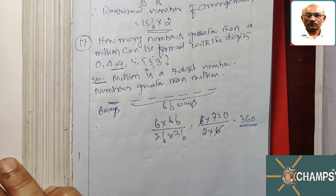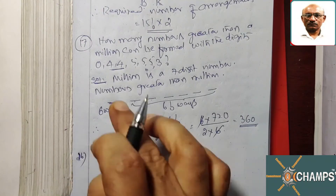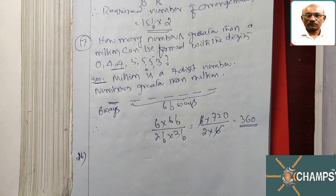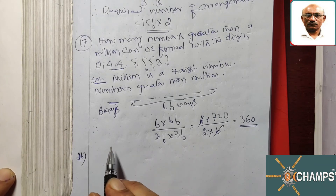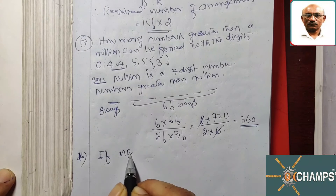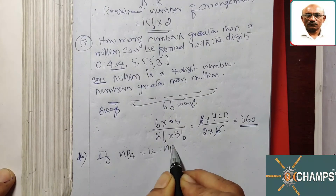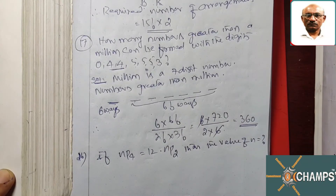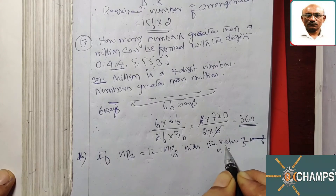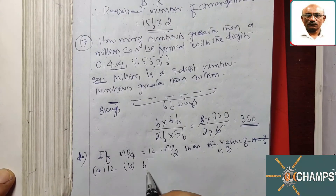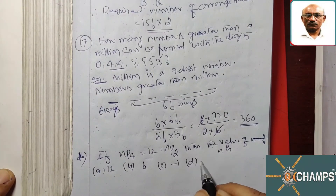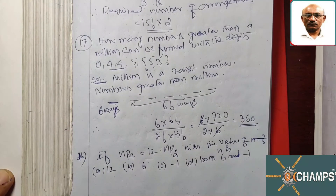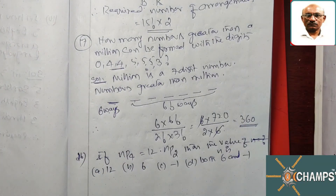Question number 26. Some problems in between are missing as they are covered in previous videos on word building with and without repetition. Now, if NP4 = 12 × NP2, then the value of N is: option A: 12, option B: 6, option C: −1, option D: both 6 and −1.